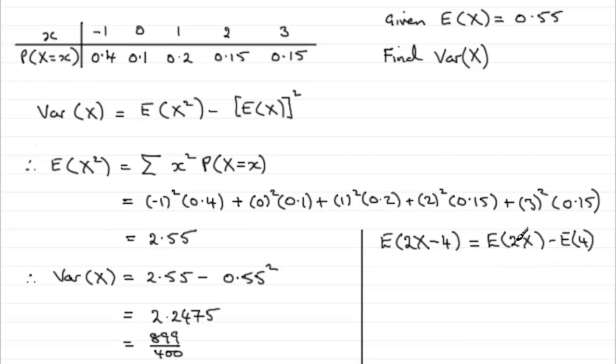And if you've got a constant times a random variable, we should know that this is the same as that constant, 2 in this case, multiplied by E of x. And then what would we expect a constant to be? Well, E of a constant is always that constant. So in this case, it's going to be minus 4. So all you've got to do then is 2 times E of x, which was 0.55, which we were given earlier, minus 4. And if you work that out, you end up with minus 2.9. So that is the last part of the question.